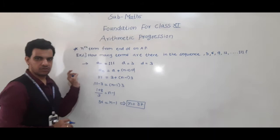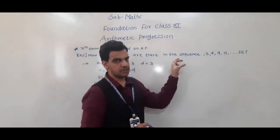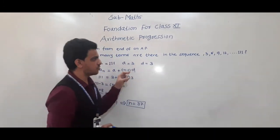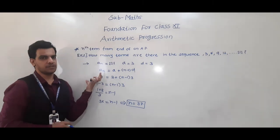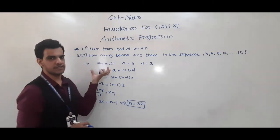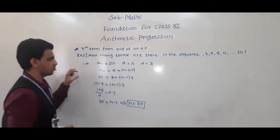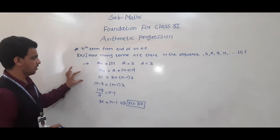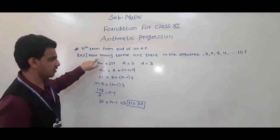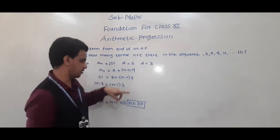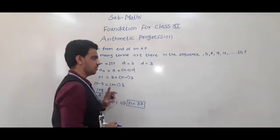So, n = 37 — total terms is 37. One point to note: each sequence is not an AP, but each AP is a sequence.